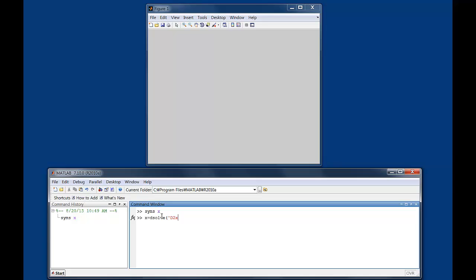D2x plus 7*Dx plus 10*x equals 20. This is the original differential equation. Initial conditions: x(0) is 5 and x dot is 3.